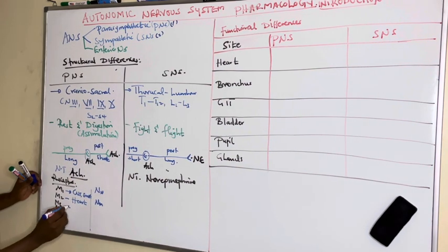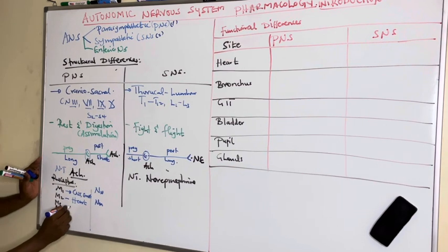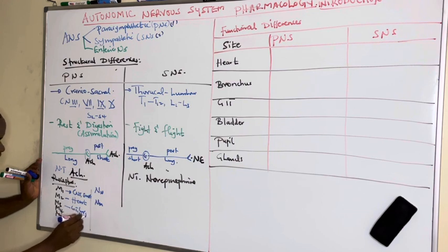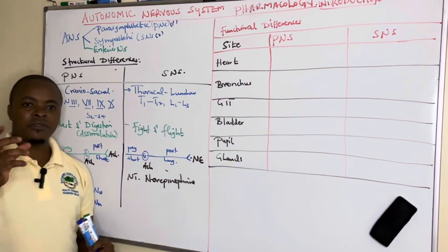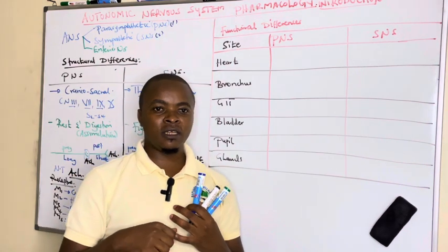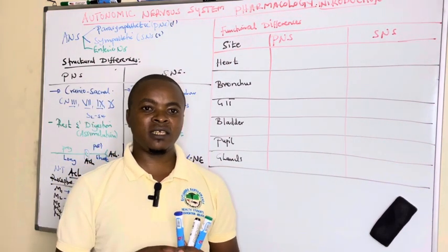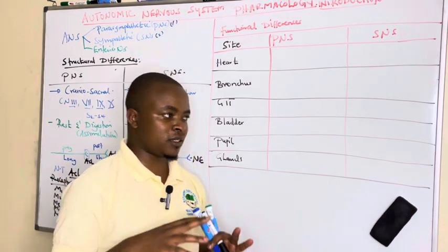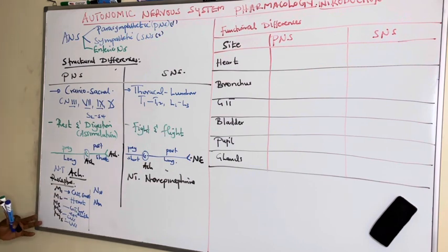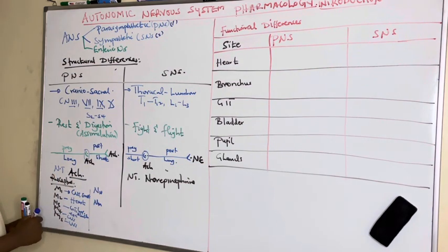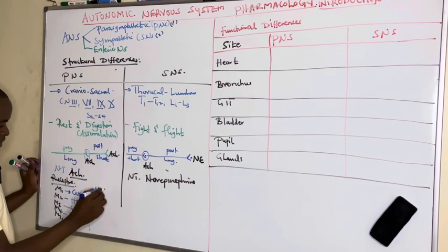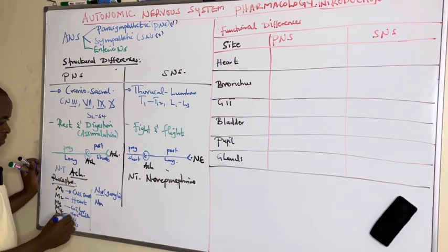M3 is widely distributed in smooth muscle tissues such as the GIT, lungs (bronchus), urinary bladder, eyes, mouth, and blood vessels. M4 is found in the CNS, and M5 is also in the central nervous system. Nicotinic neuronal receptors are found at the ganglia of both nerve fibers, while nicotinic neuromuscular receptors are where neurons meet skeletal muscles.